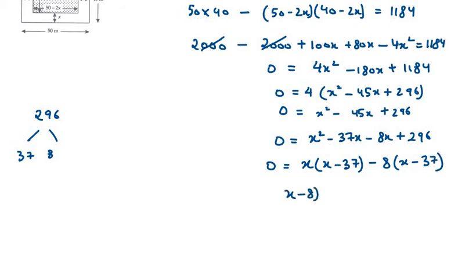So we have two values here, that is x minus 8 equals 0, and other as x minus 37 equals 0. So x is 8, and x is 37.